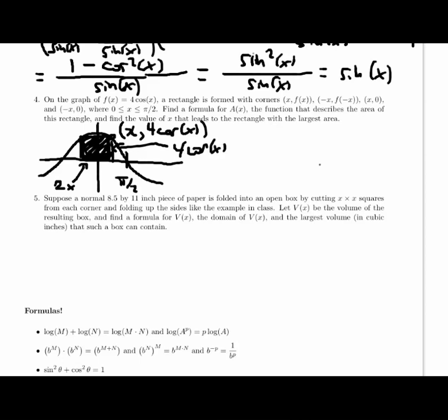So, my area function is base times height, which will be 2x times 4 cosine x. And it probably makes sense to write that as 8x cosine x before putting it in my calculator.